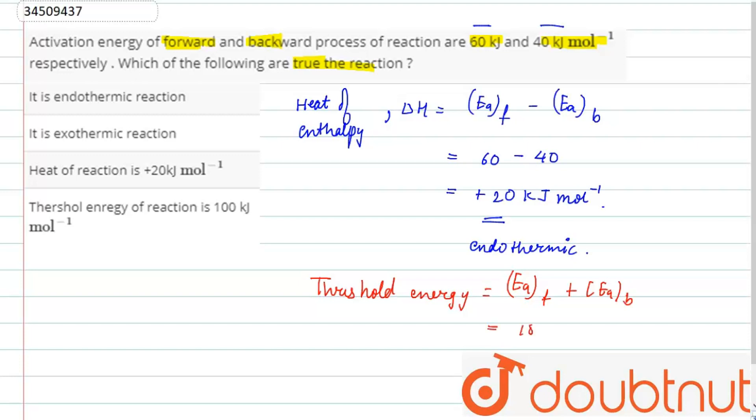That is 60 plus 40, 100 kJ per mole. So if we see the options, option number A: it is an endothermic process. This is correct.